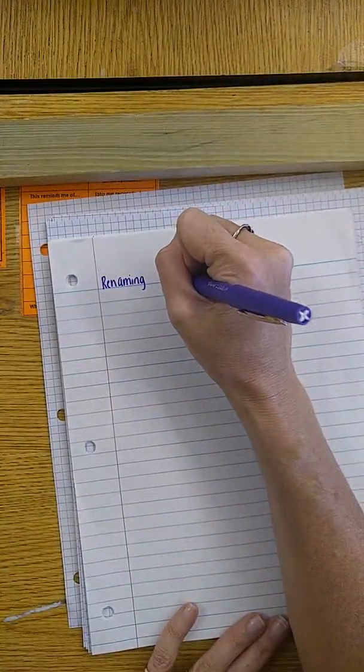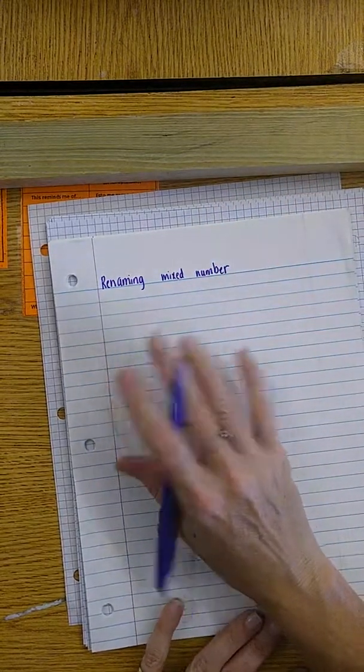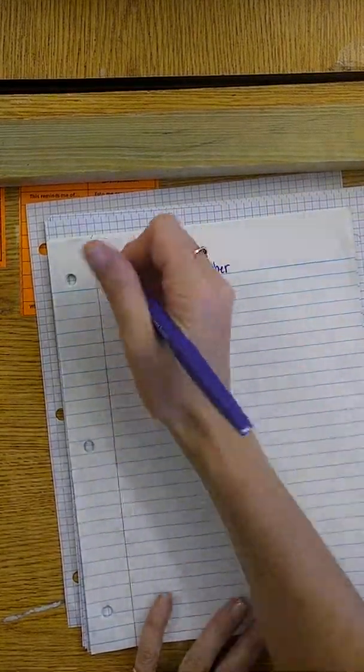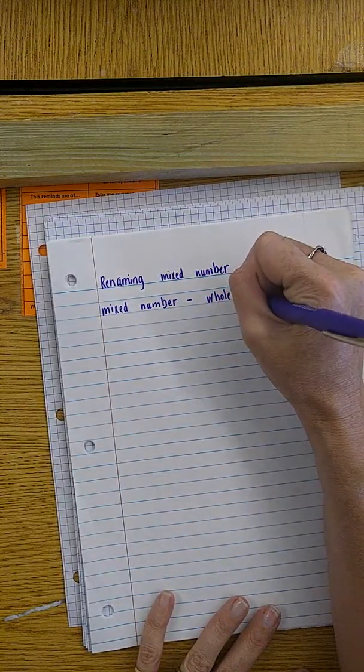So renaming mixed numbers. For example, first of all, a mixed number, let's talk about what that is. A mixed number is a number that contains a whole number and a fraction.